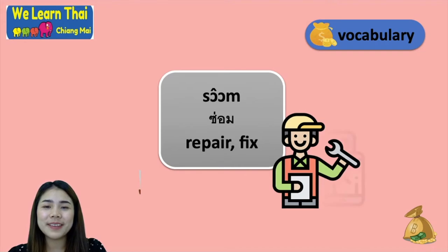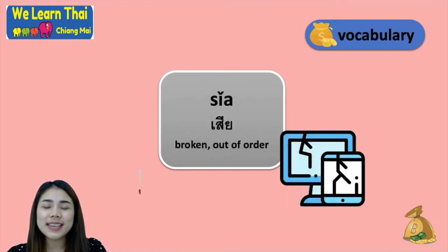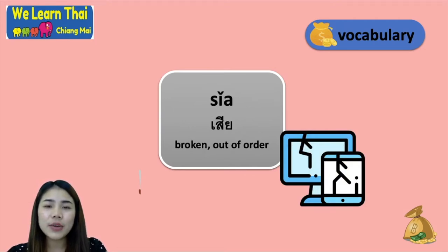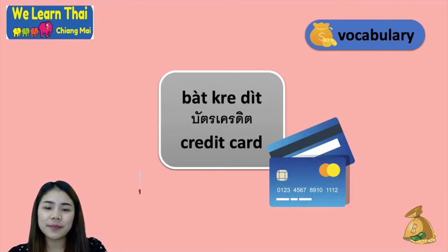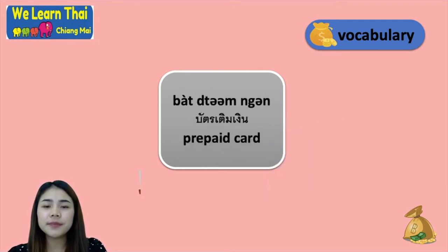Next, the word เสีย means broken or out of order. You can say โทรศัพท์เสีย meaning the phone is broken, or มอเตอร์ไซเสีย meaning the motorbike is out of order. Next, บัตรเครดิต means credit card.